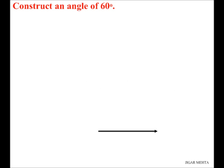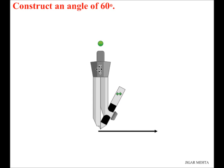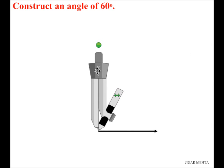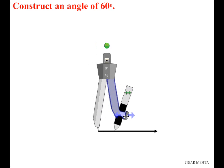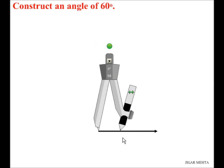To draw an angle of 60 degrees, I am going to use a compass and keep the point of the compass right at the starting point of the ray, then choose a comfortable radius. This radius can be anything — choose a radius with which you are comfortable. Once I have chosen this radius, I'm going to keep it as it is and not change it throughout my construction.